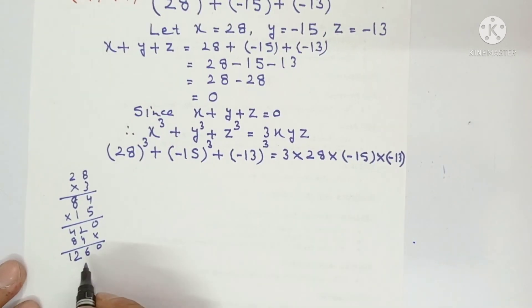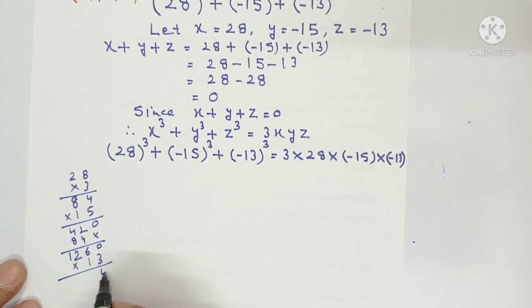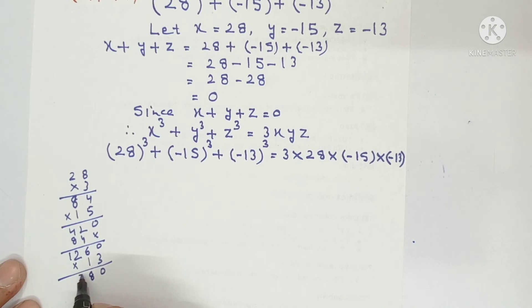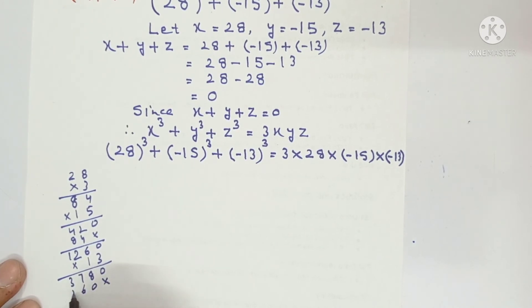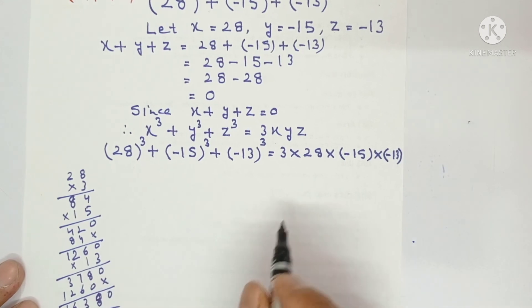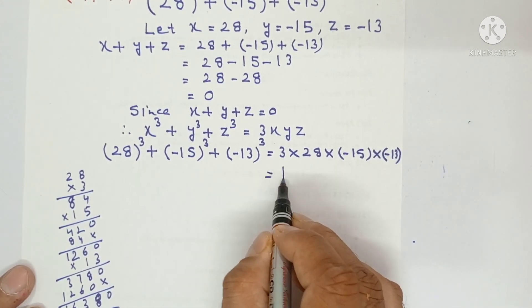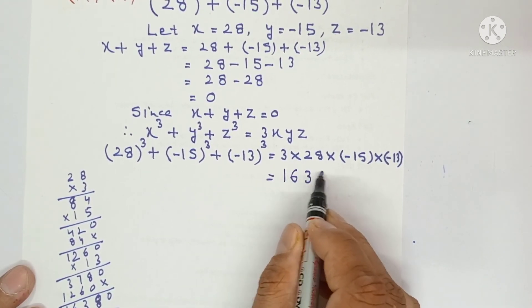Now multiply 1260 by 13. 3 times 0 is 0, 3 times 6 is 18. Then 1 times each digit: 0, 6, 2, 1. Adding these gives 16,380.